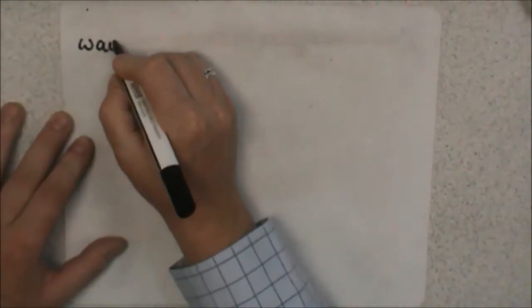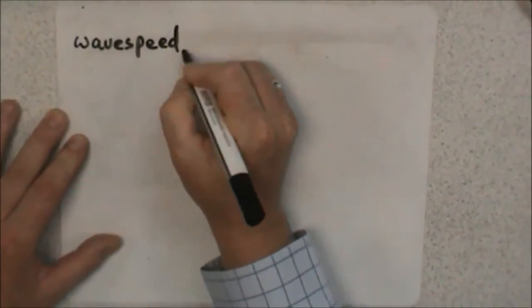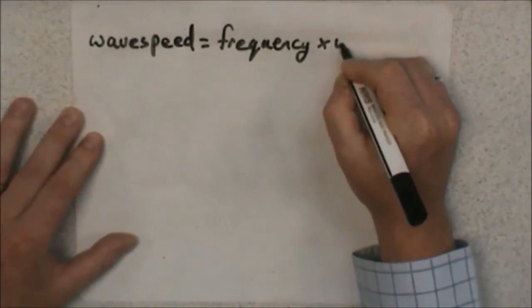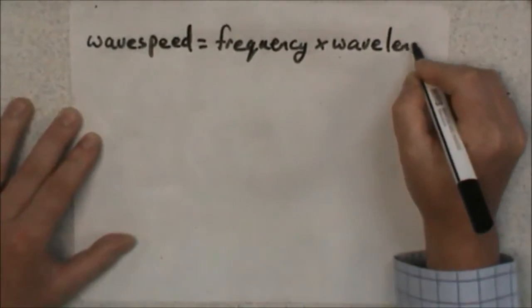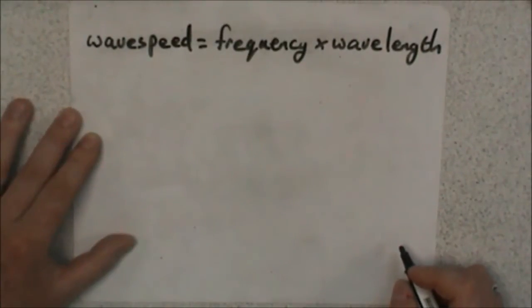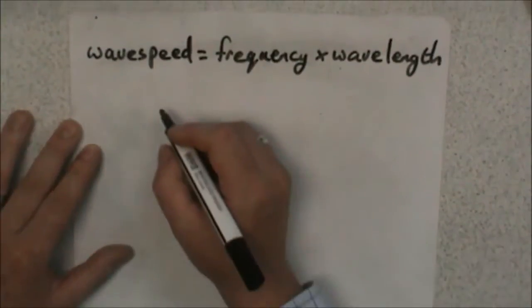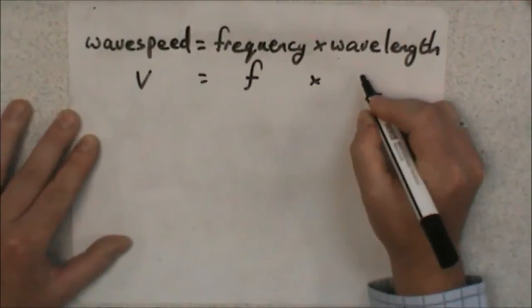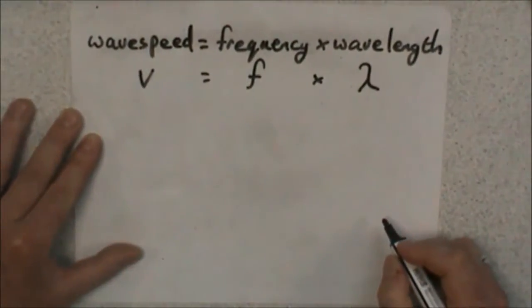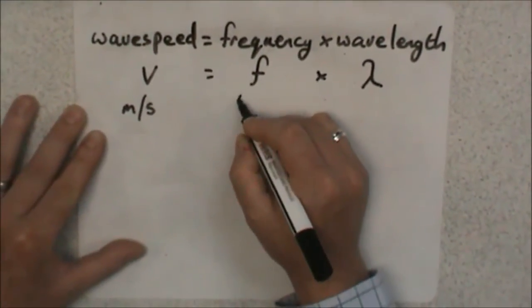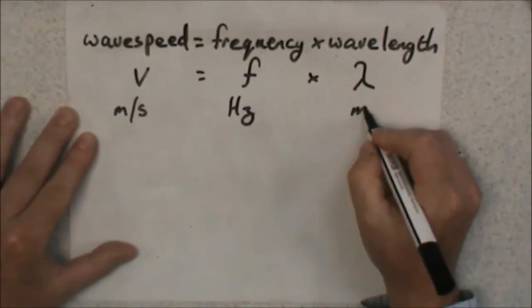So using the wave speed formula where wave speed equals frequency multiplied by wavelength, we can work out the wave speed of our standing wave on our elastic shock cord. Now wave speed is given the symbol v, frequency is given the symbol f, and wavelength is given the symbol lambda, the Greek letter L. Wave speed is measured in meters per second, frequency is measured in hertz, and wavelength is measured in meters.